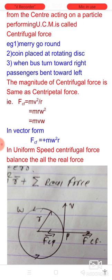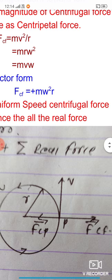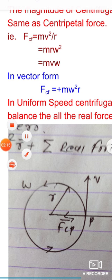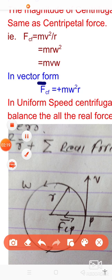The magnitude is similar to centripetal force. The magnitude is mv²/r or mrω² or mvω. In vector form, F equals plus mrω²r̂. The plus sign indicates the direction of the radius vector OP and the direction of centrifugal force are the same.